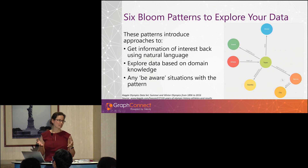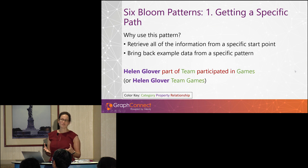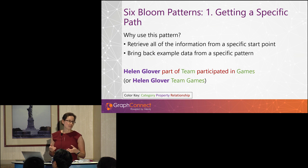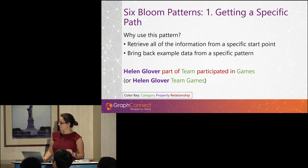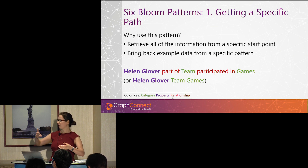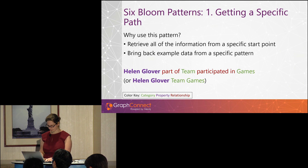The first Bloom pattern is getting a specific path. In this situation we've got a defined start point. We know what question we want to ask and we have a specific pattern. For example, I may want to ask: what games and teams did the British rowers Helen and Glover compete in? In Bloom, you have a property, the relationship, and the node type. Bloom will also fill the gaps — you don't necessarily have to put in all the relationships. If you understand that an athlete is linked to a team that's linked to a game, Bloom will fill those gaps for you.